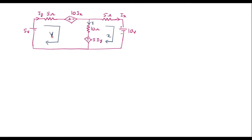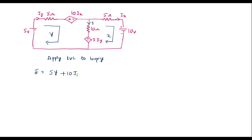Now let me apply KVL — Kirchhoff's voltage law — to loop y. I can write it as: 0 is equal to the voltage across the 5 ohm resistor, which is 5y, plus 10ix. The current through the 10 ohm resistor has both y and x flowing, but in opposite directions, so it is 10(y minus x), plus 5iy.